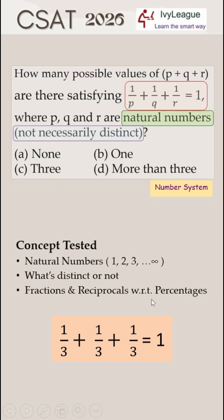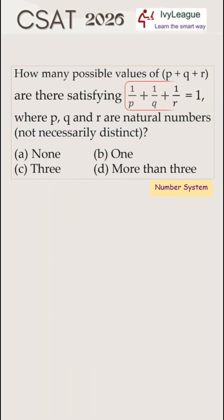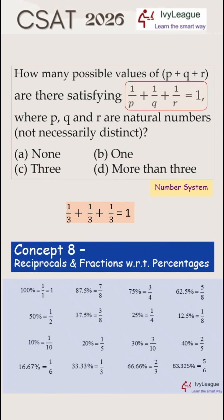Hey this reminds me that 1 upon 3 plus 1 upon 3 plus 1 upon 3 is equal to 1. And I need to recall the table of fractions and reciprocals with respect to percentages values which I should have already studied in class. This is the hint needed to solve the question. This is a whole table which you should have mugged up before you approach this question.